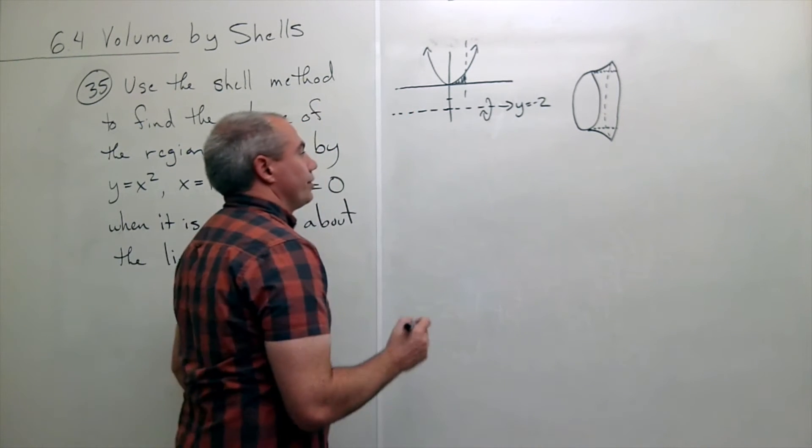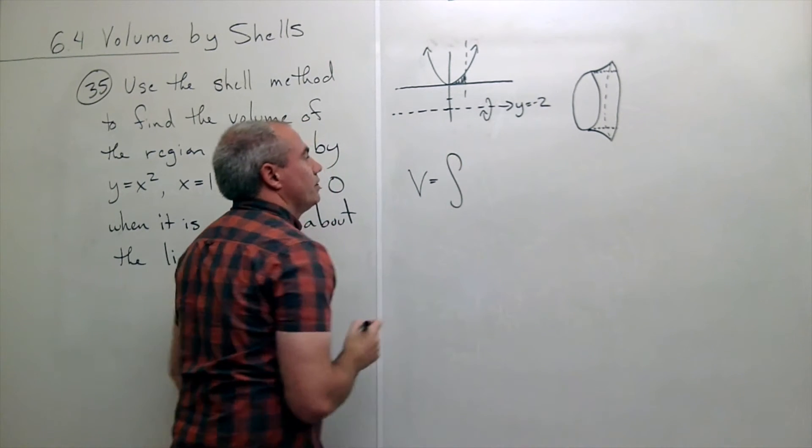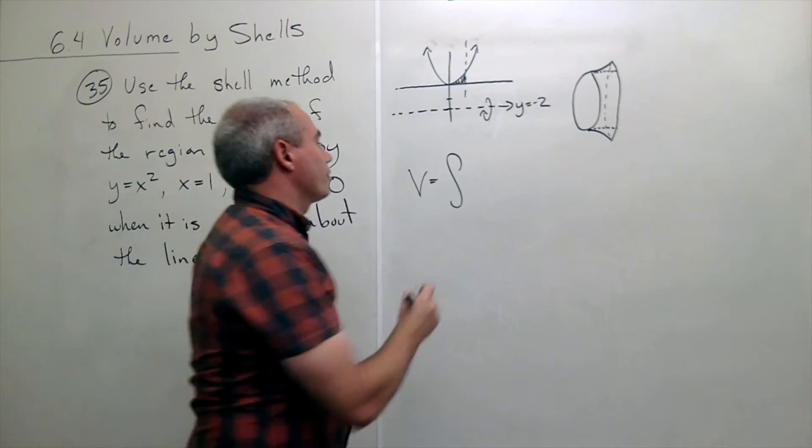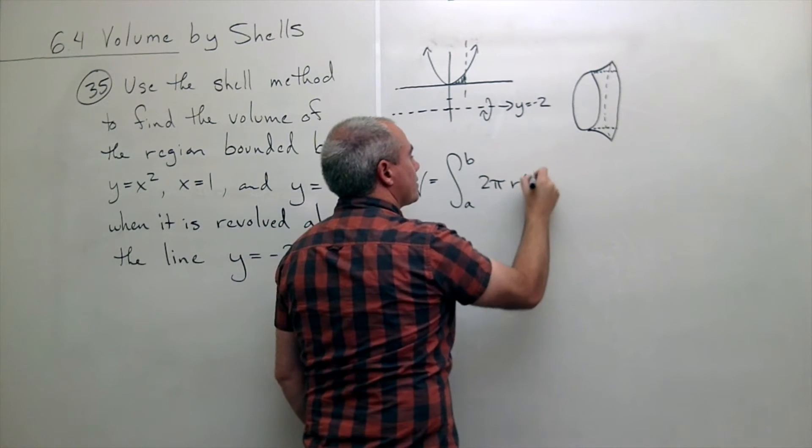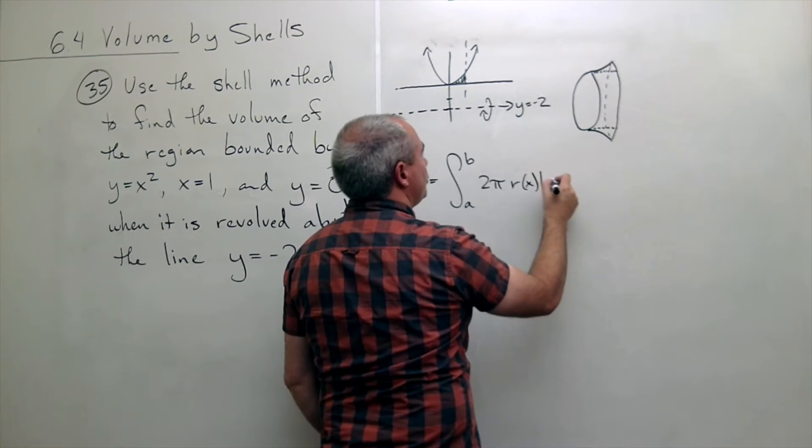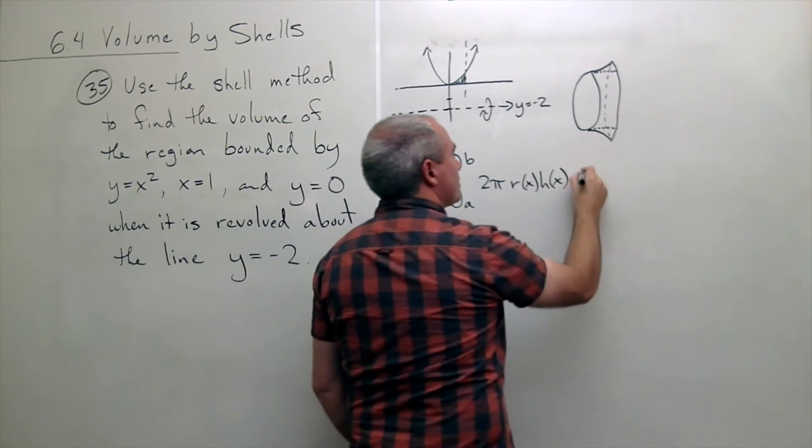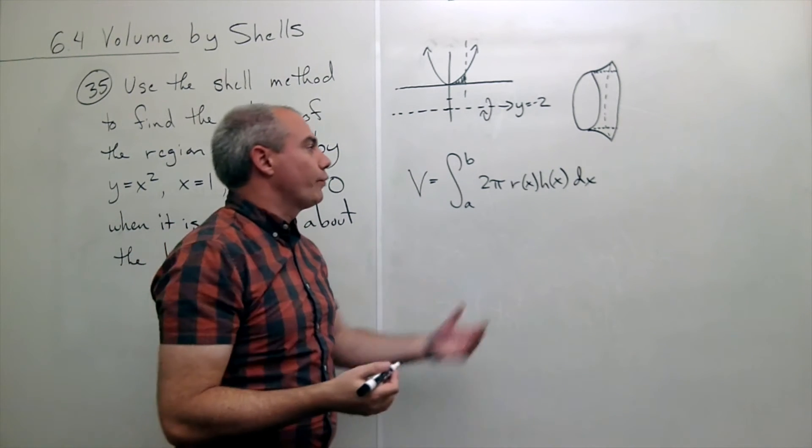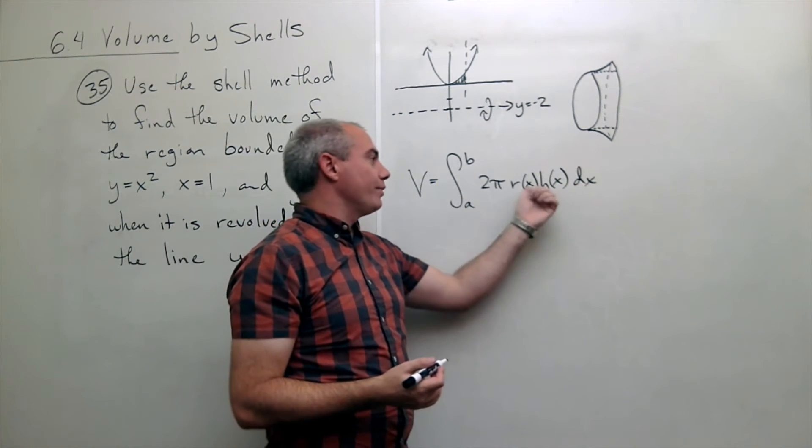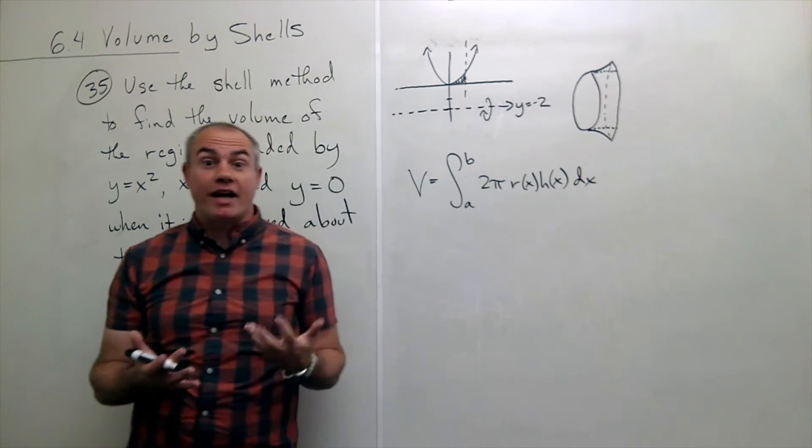Same as we've always done, volume is still equal to the integral from a to b of 2 pi r of x times h of x dx, as long as we're integrating with respect to x. If we're integrating with respect to y, then we need to change each of these to y. So which is it? Is it x or is it y?